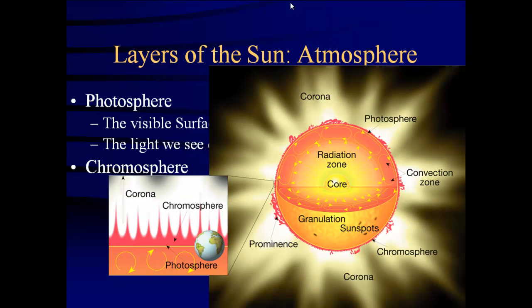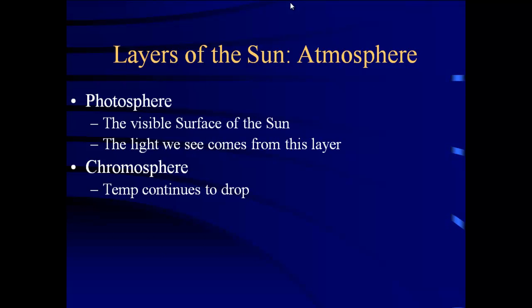The next layer out is the chromosphere. What's important to note here is that from the core outward, the temperature has been dropping from close to 10 million degrees Kelvin or more, getting less and less. The chromosphere is really the first layer of the atmosphere; the photosphere, even though it's on the same slide, is still the surface. There's really no clear dividing line between any of these layers — it's all plasma or gas state and they just blur into one another.